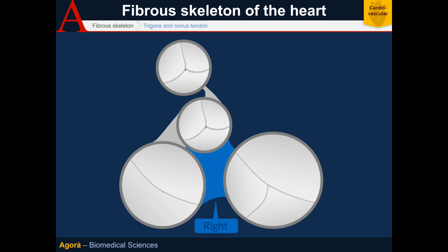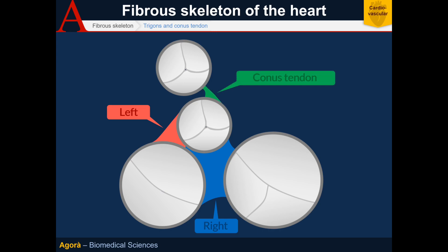The connecting structures are: the right trigone, found between the two atrioventricular ostia and the aortic one; the left trigone, found between the mitral ostium and the aortic one; and lastly the conus tendon, which unites the two arterial valves and has a conical shape with a base at the aortic ostium.